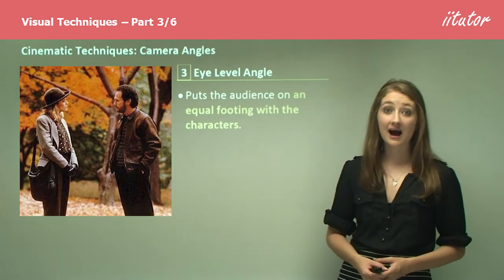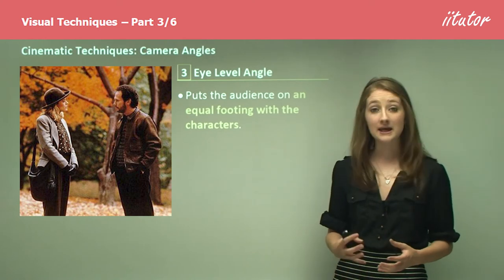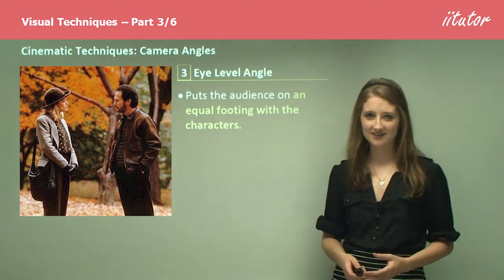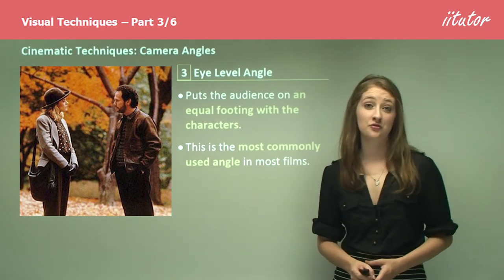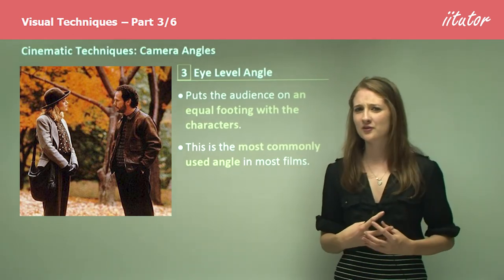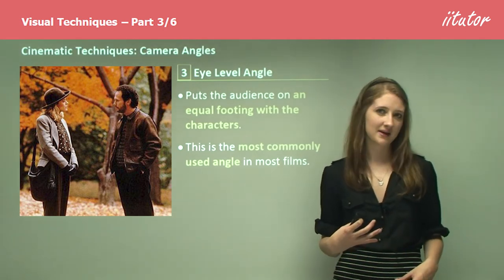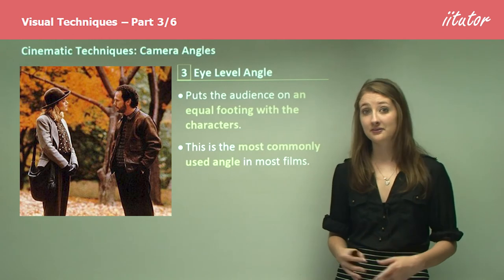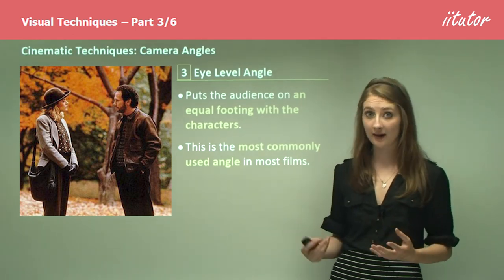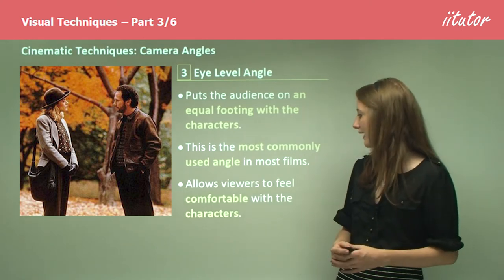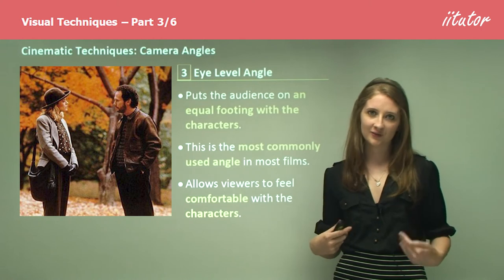We then get to the eye level angle, which puts the audience on equal footing with the characters. This is the most commonly used angle in most films — used when people are normally talking to each other on the ground and there is interaction between characters. The cameraman is often literally holding the camera at ground level, and this allows viewers to feel comfortable with the characters by being on their own level.